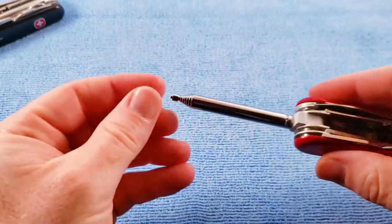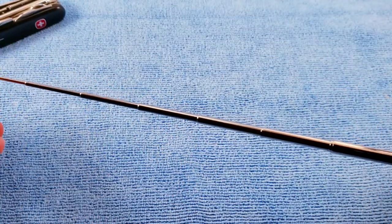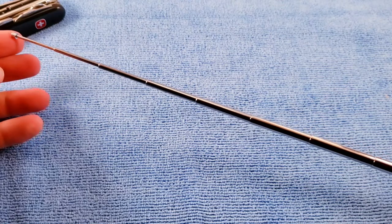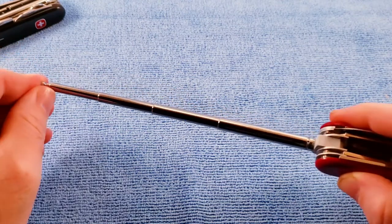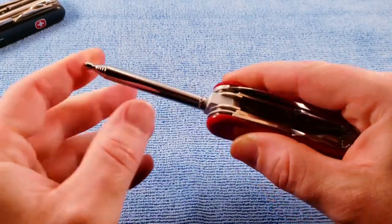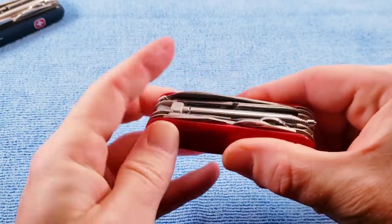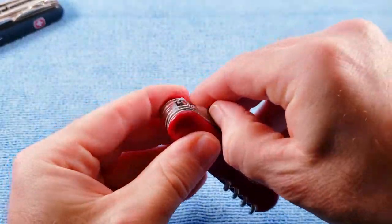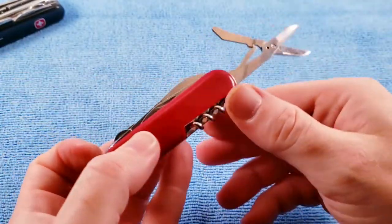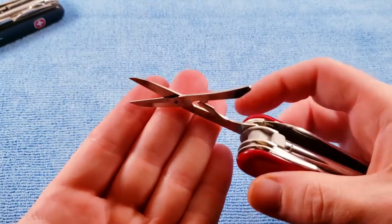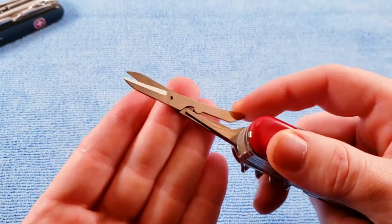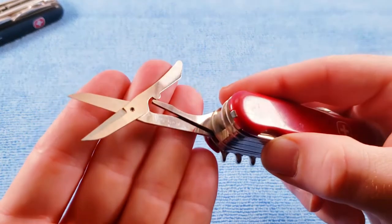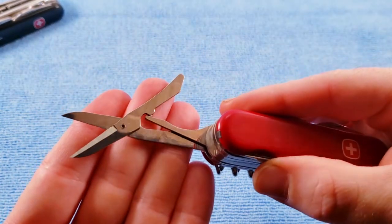The telescopic pointer that extends out 12 inches, the Wenger pattern of scissors, marketed as springless, and then we do have the patent stamp on there as well.